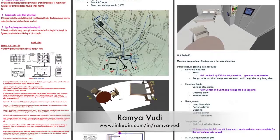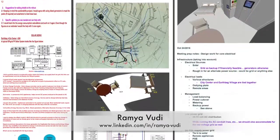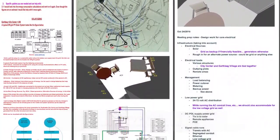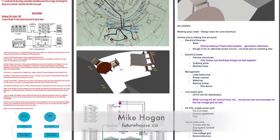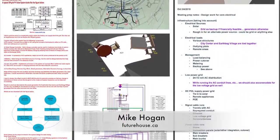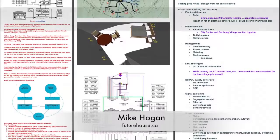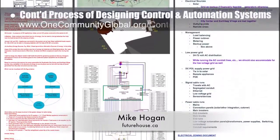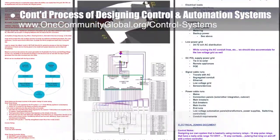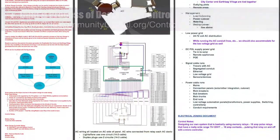Ramya Voodi, electrical engineer, also joined the team and began working on the solar sizing plan, and joined Mike Hogan, automation systems developer and business systems consultant, to continue the process of designing the control and automation systems. What you see here are notes from her first two weeks of work on both of these tasks.